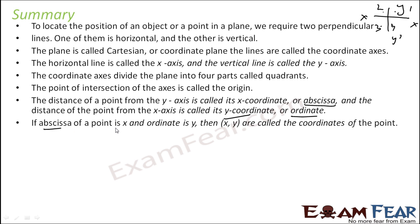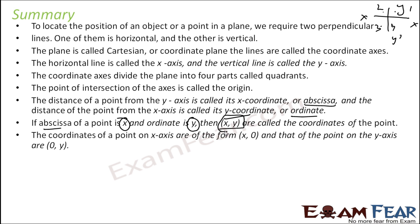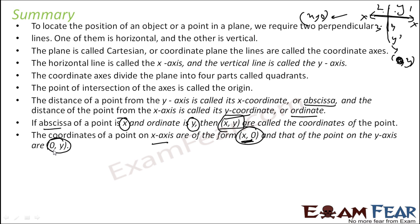If the abscissa of a point is x and the ordinate is y, we denote this point as (x, y) with brackets and a comma. Coordinates of a point on the x-axis are of the form x comma 0, since they lie on the x-axis. Coordinates of a point on the y-axis are of the form 0 comma y, not y comma 0. The origin is 0 comma 0.